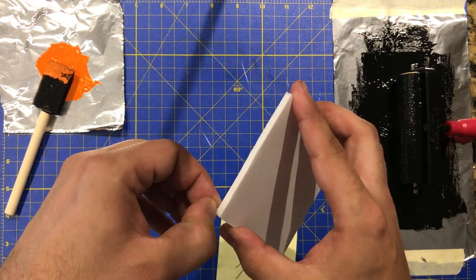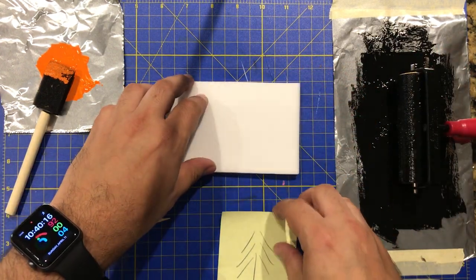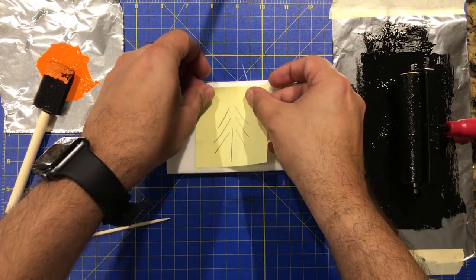This piece of foam has a layer of paper on both sides. We'll just take off one side. That way it'll make it easier to carve into the foam.